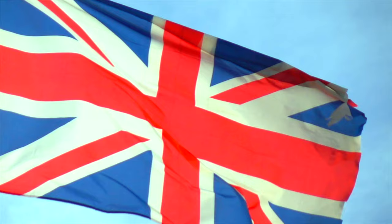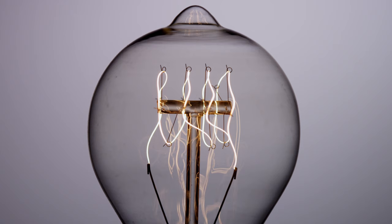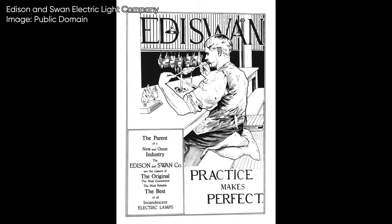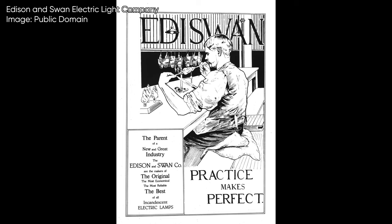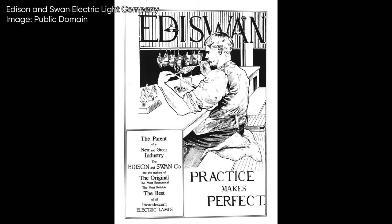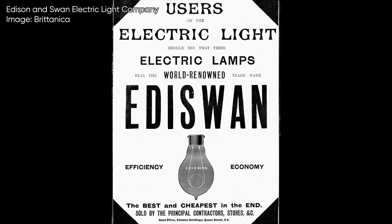Edison tried to get a patent in the UK, but Joseph Swan already had a patent there. Edison ended up suing Swan, but the suit was not successful. The two, in turn, formed a joint venture in 1883 called Ediswan, which sold lamps throughout Great Britain and much of Europe. Ediswan lamps combined the best of both inventor's works using Swan's improved cellulose filaments.